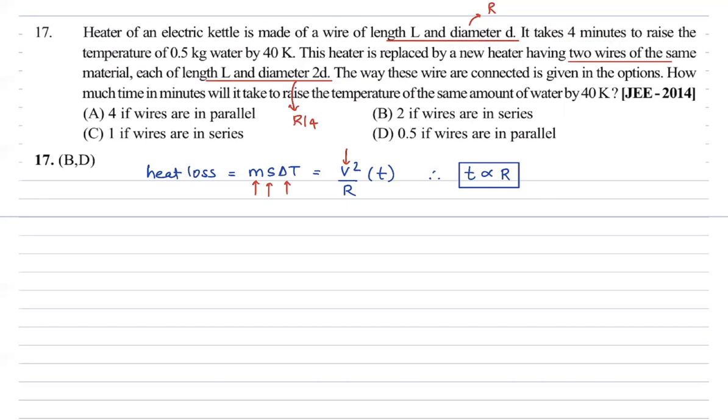If wires are in parallel, two wires connected R by 4, R by 4, effective resistance will be R by 2. Resistance becomes half. If resistance becomes half, time also becomes half, so 4 becomes 2.